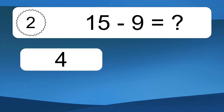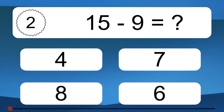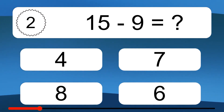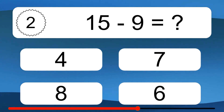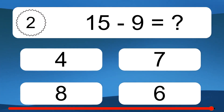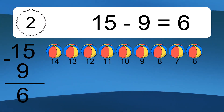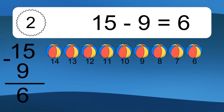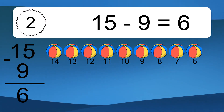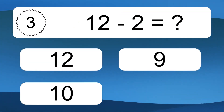15 minus 9 equals what? 15 minus 9 equals 6. Let's count it: 14, 13, 12, 11, 10, 9, 8, 7, 6.